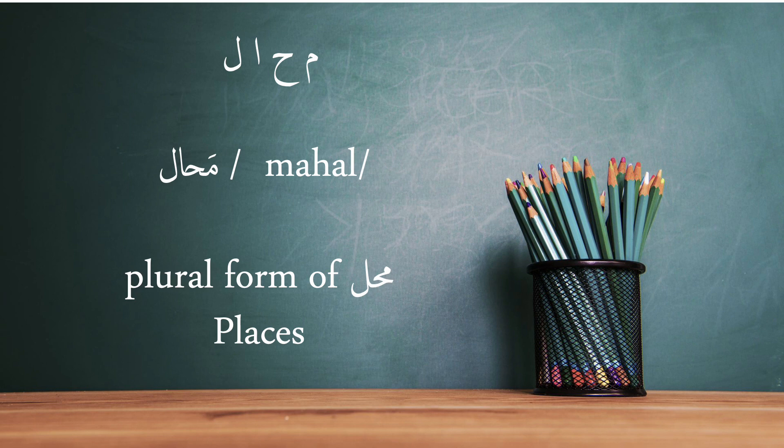This word has been made of four letters: mim, he, alif, lam. It is possible to pronounce this word in two ways.